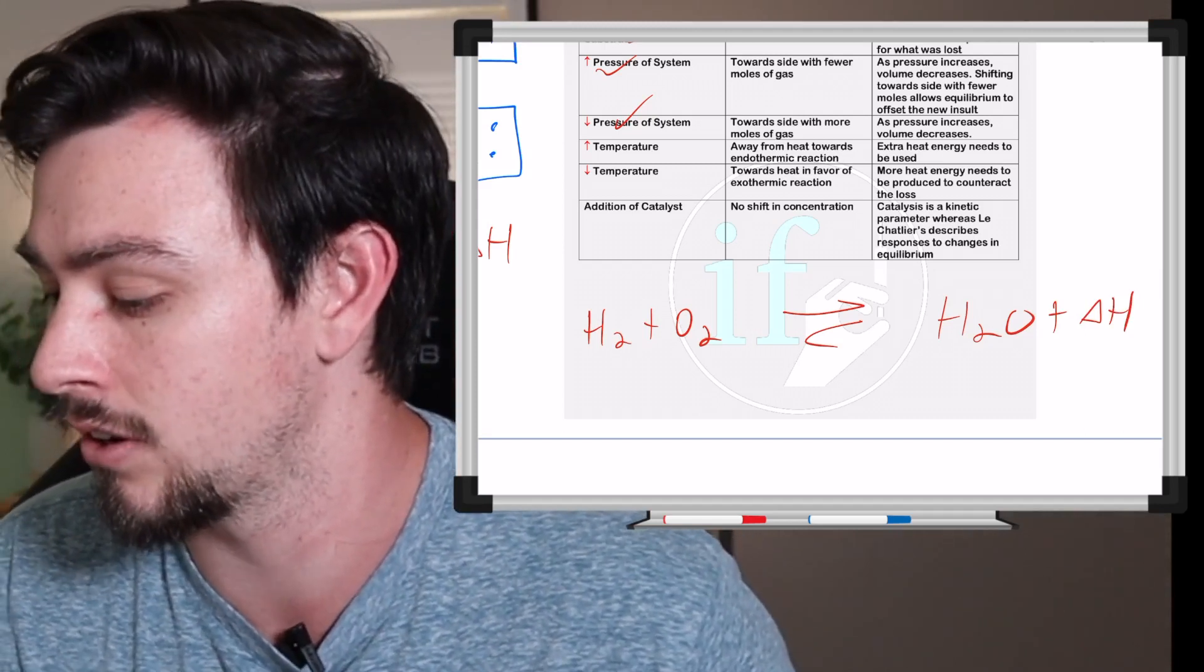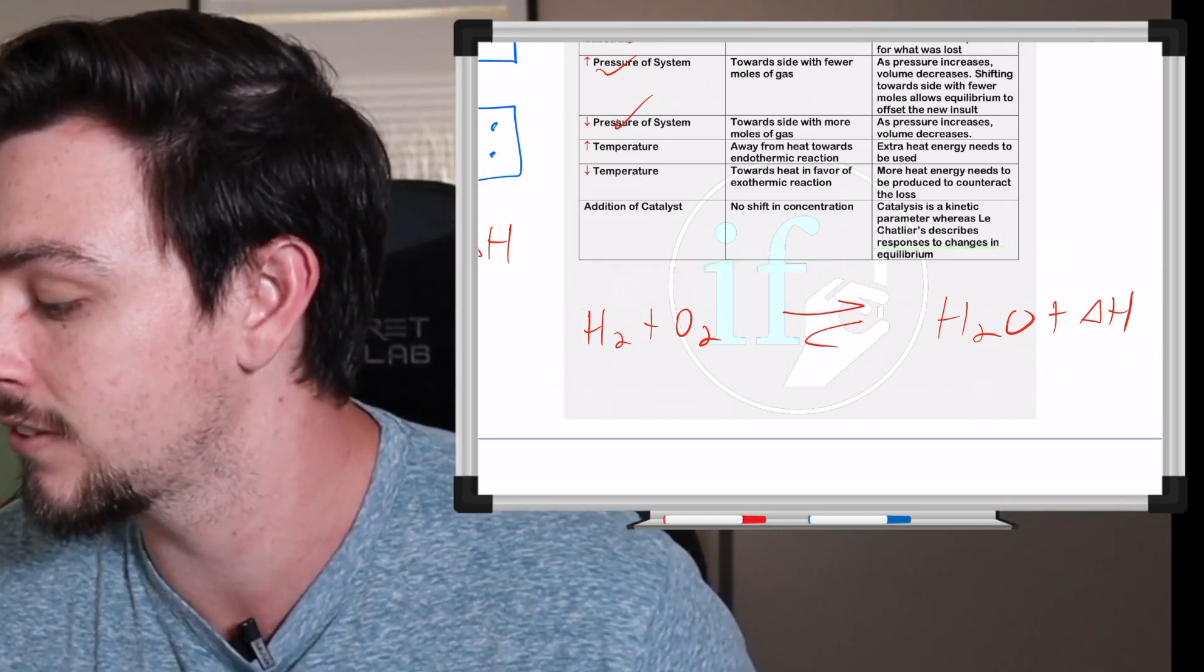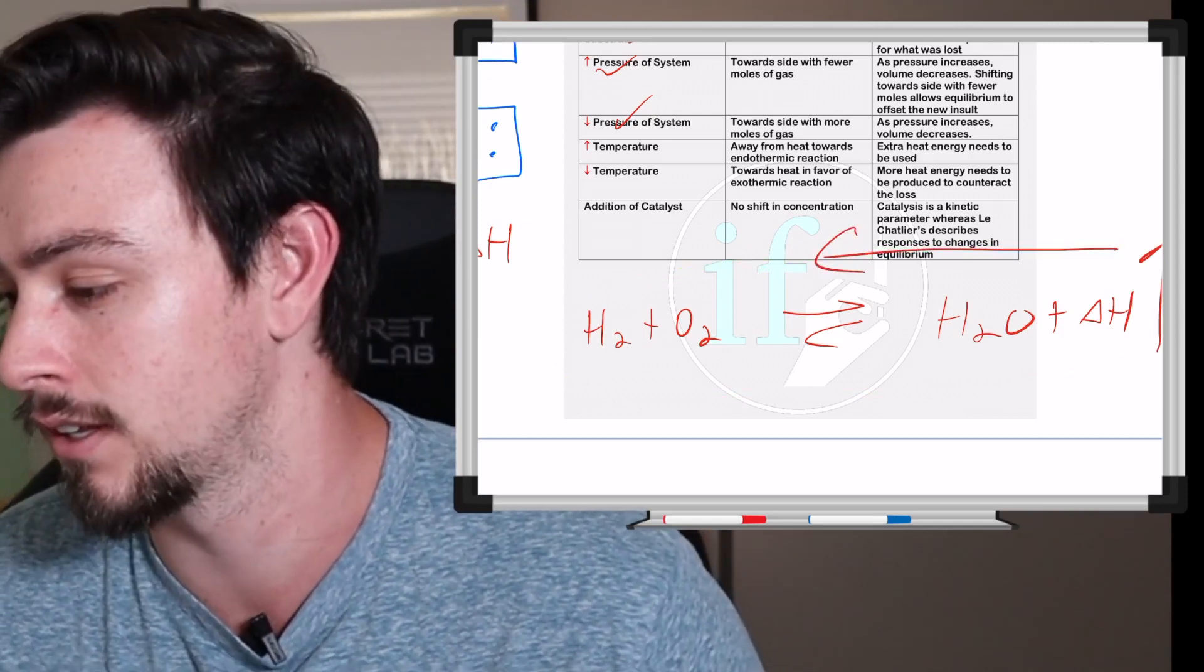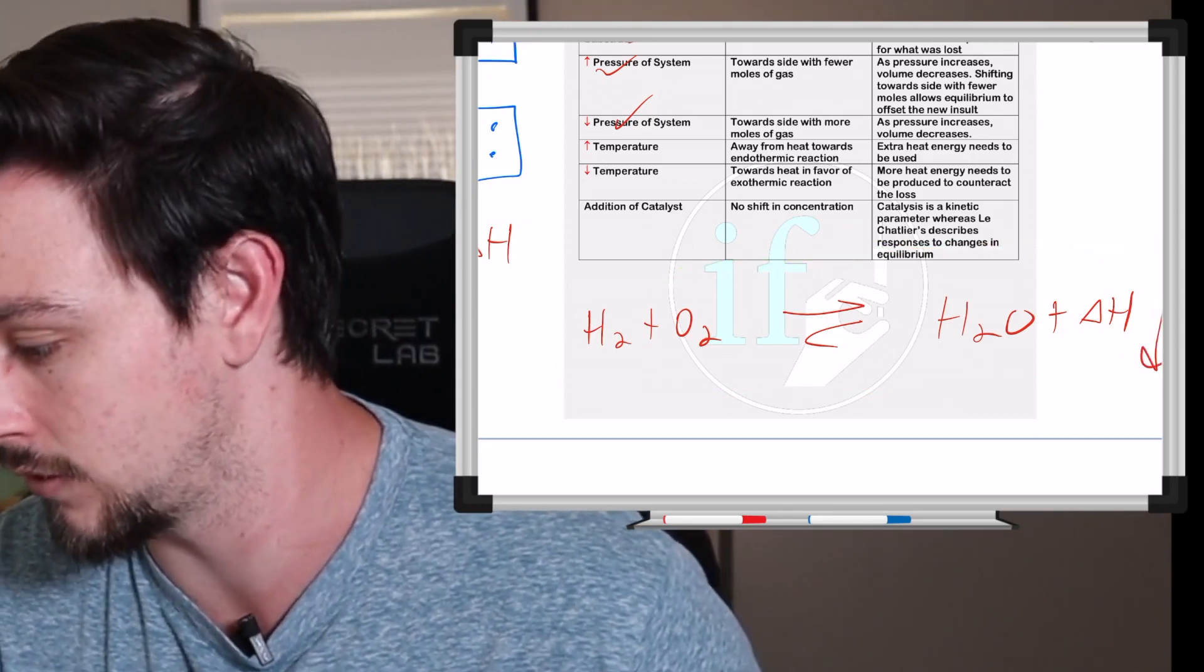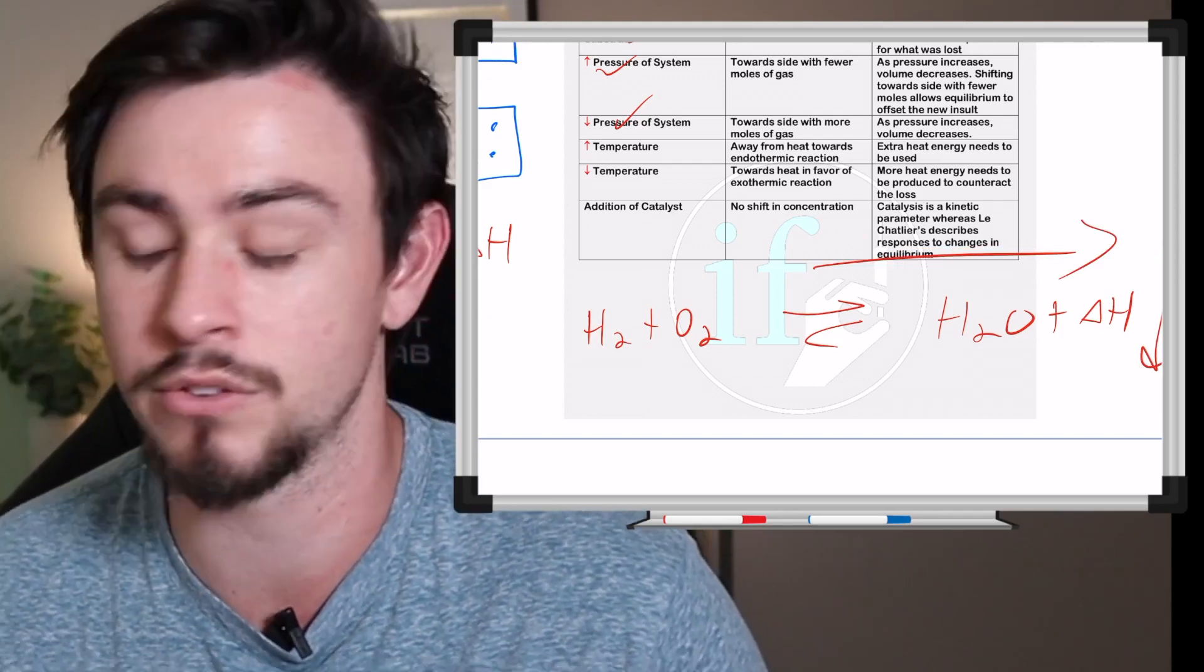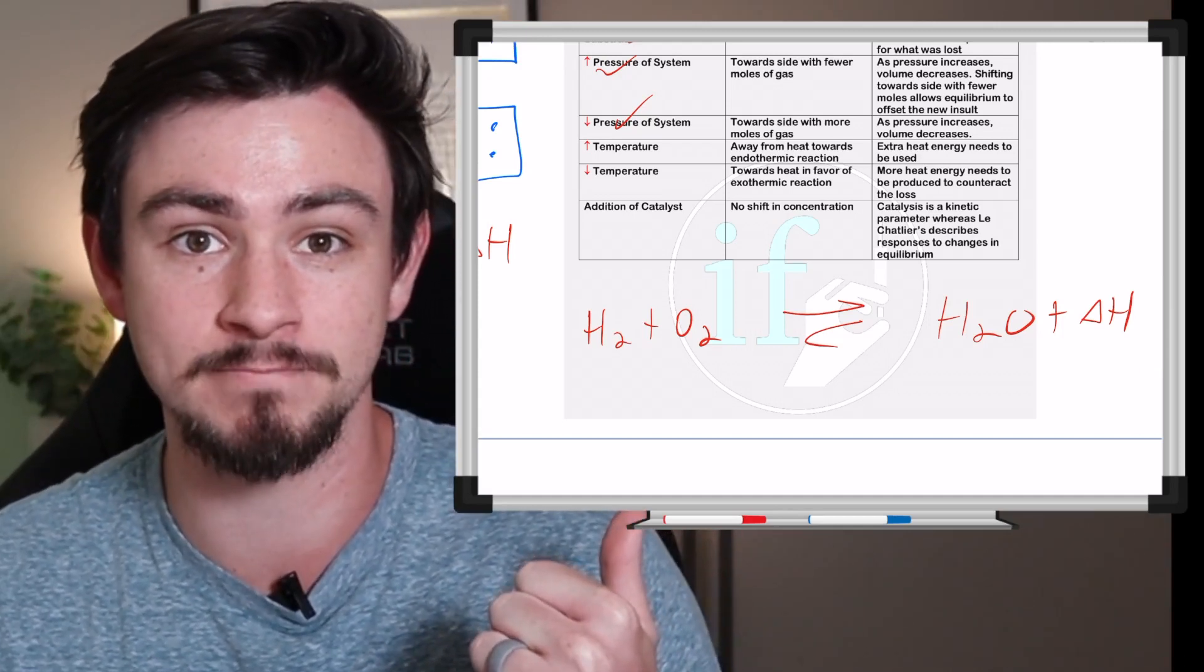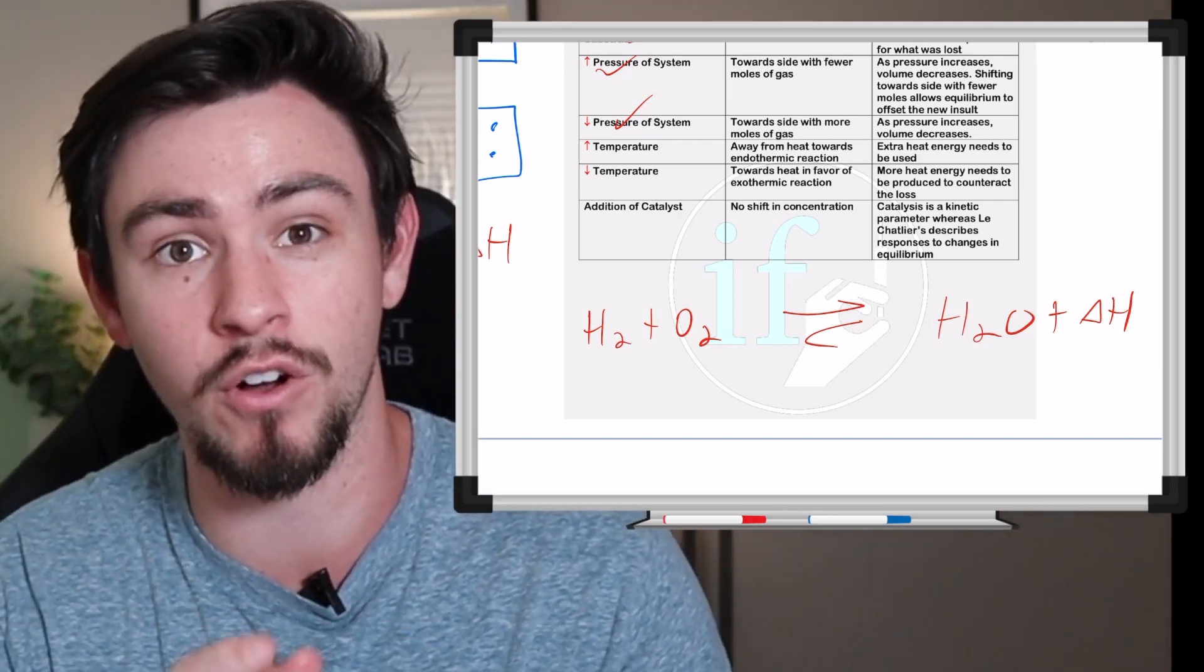So let's say we're here. We're using an exothermic reaction. If we increase the heat, which direction is the reaction going to shift? Away from the insult, right? Okay, what if we decrease the heat? Well, it's going to shift to oppose the insult. So that's the basis of Le Chatelier's principle—that whatever insult we throw at the equilibrium, we will get a shift in the reaction to offset that.